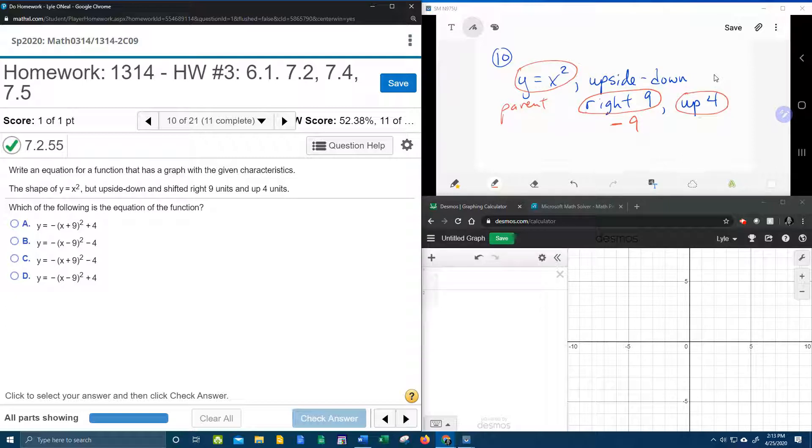And then we have an up 4, which is a vertical shift. Plus is up, minus is down.